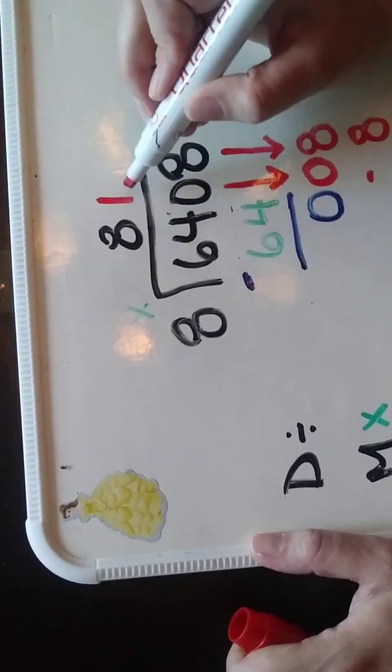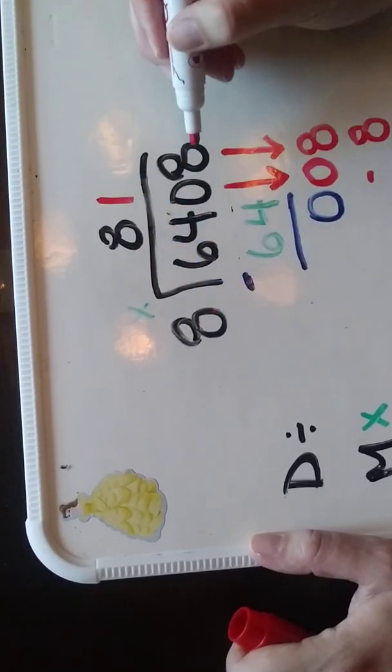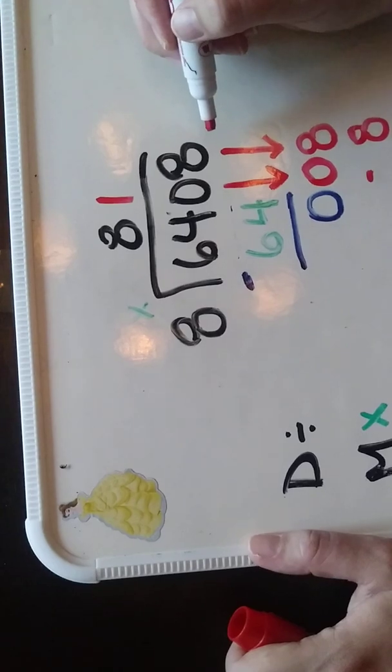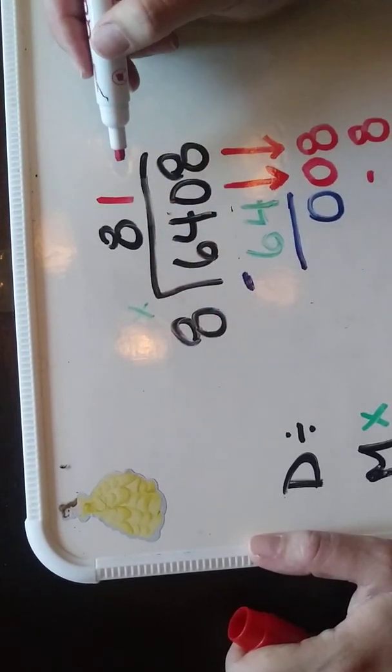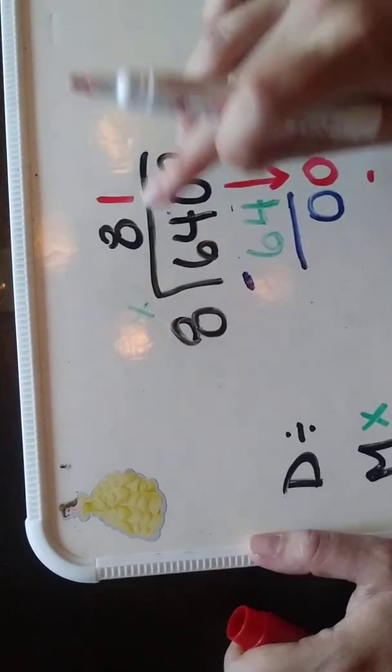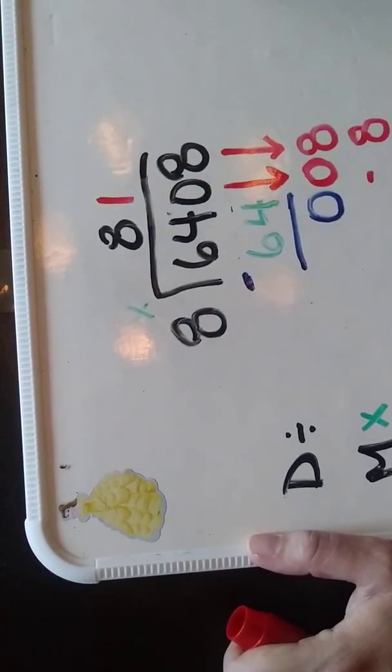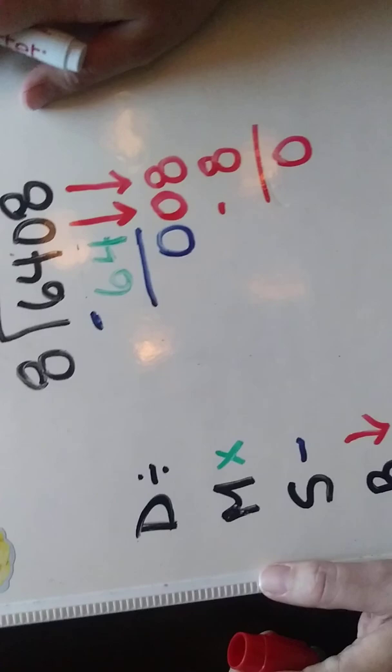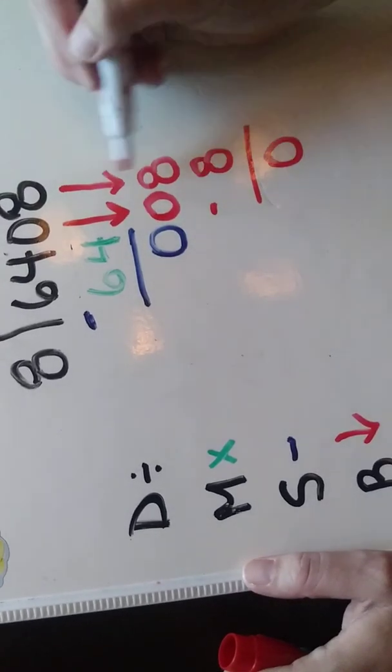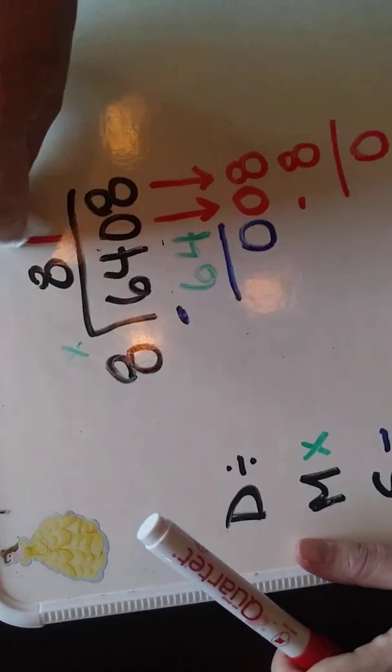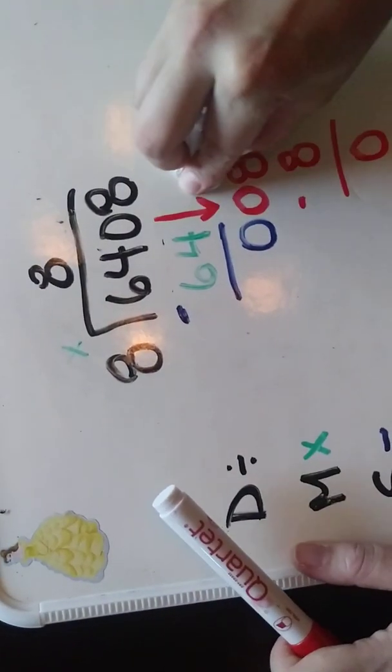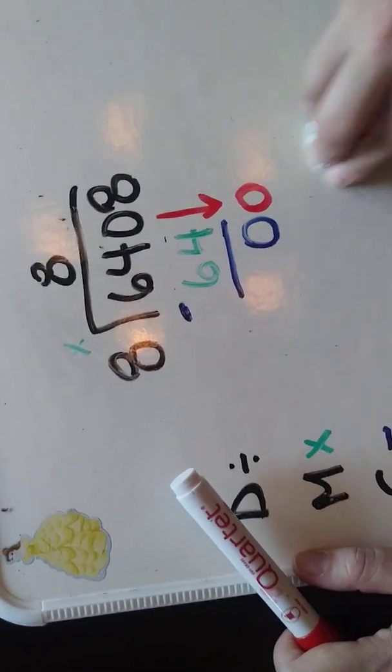If I check that on a calculator, 81 times 8 is not 6,408. 6,408 divided by 8 is not 81. So you really need to be careful here—there's a missing digit somewhere in here. So if this happens, never do the double bring down. We're going to get rid of this and do it the right way.